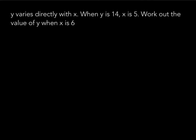This question looks slightly different to the ones we've done previously. It says 'y varies directly with x' — that's just another way of saying y is directly proportional to x. We're told when y is 14, x is 5. They'd like us to work out the value of y when x is 6. Up until this point the steps are exactly the same, so let's go through them.